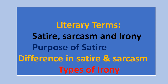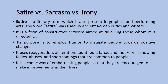Assalamu alaikum students. Today I will discuss literary terms: satire, sarcasm, and irony — the purpose of satire, the difference in style between sarcasm and satire, and types of irony. Satire is a literary term which is also present in graphics and performing arts. The word satire was used by ancient Roman critics and writers. It is a form of constructive criticism aimed at ridiculing those whom it is directed to. Its purpose is to imply humor and to instigate people towards positive change.